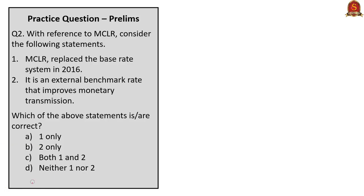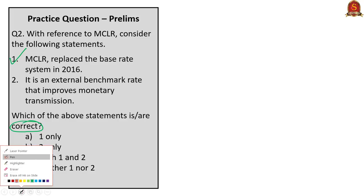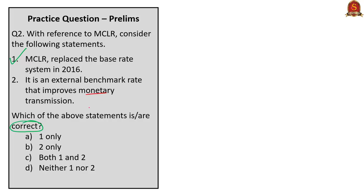The next question is with respect to MCLR. Two statements are given: Statement 1: MCLR replaced the base rate system in 2016—this is correct and factual. Statement 2: it is an external benchmark rate that improves monetary transmission—this is wrong because MCLR does improve monetary transmission, but it is not an external benchmark rate; rather, it is an internal benchmark rate because it is determined by the bank itself. Therefore, only the first statement is correct. The answer is A: 1 only.